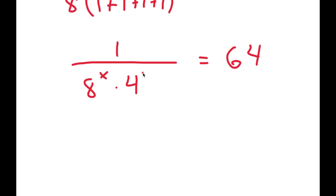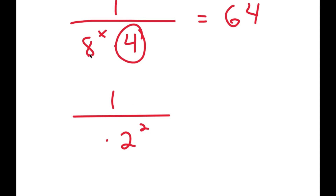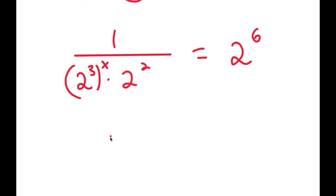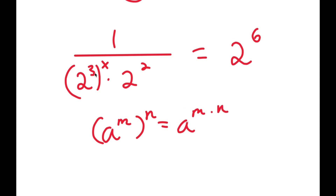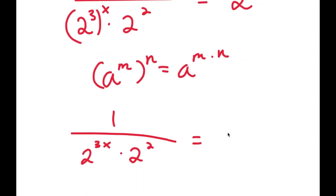Now from here, I'm going to rewrite all these terms as powers of 2. So 4 is equal to 2 squared. 8 is the same thing as 2 to the power of 3, so I have 2 to the power of 3 to the power of x. And 64 is the same thing as 2 to the power of 6. Now if I have something in the form a to the power of m to the power of n, this equals a to the power of m times n. So 2 to the power of 3 to the power of x equals 2 to the power of 3x. And I have this times 2 squared is equal to 2 to the power of 6.